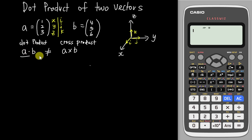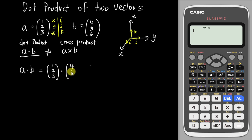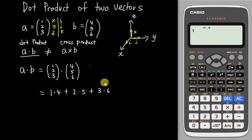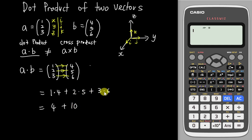So for A dot B, what you need to do is insert vector A (1, 2, 3) dot vector B (4, 5, 6). How are we going to multiply them? It's like this: 1 multiply 4, so you get 1×4 + 2×5 + 3×6. You multiply corresponding components and add them all together. So 1×4 = 4, 2×5 = 10, 3×6 = 18. You should get 32.